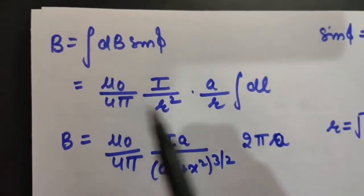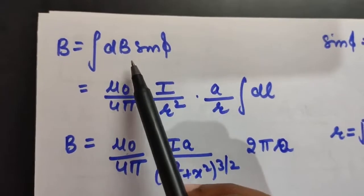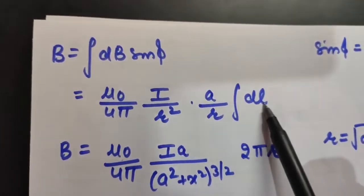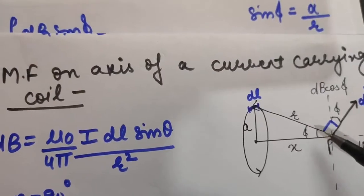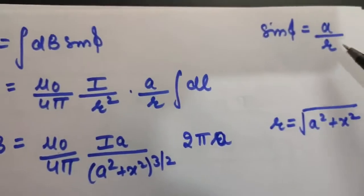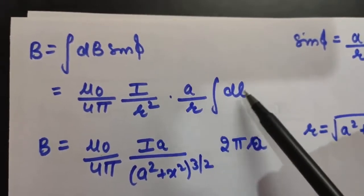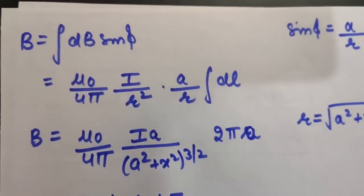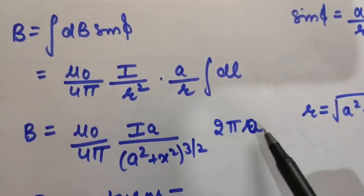To calculate total magnetic field, we integrate only the DB sin φ component because DB cos φ cancels out. DB = (μ₀/4π) × (i × DL) / R², so integrating: B = (μ₀/4π) × (i/R²) × ∫DL × sin φ. Now sin φ = A/R (perpendicular over hypotenuse), and integration of DL over the loop gives 2πA, the circumference. Using Pythagoras, R = √(A² + x²), so R³ = (A² + x²)^(3/2).